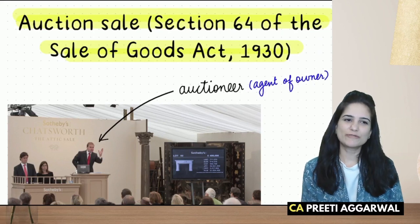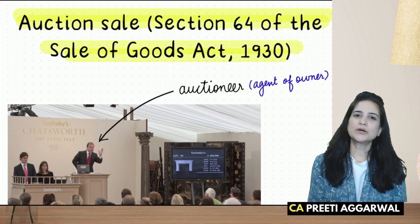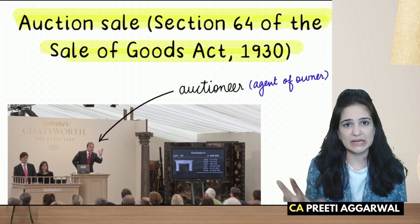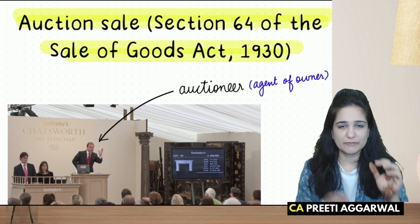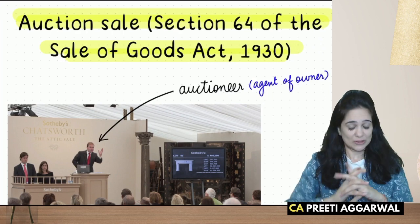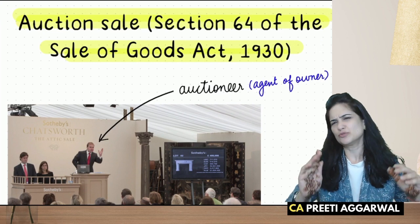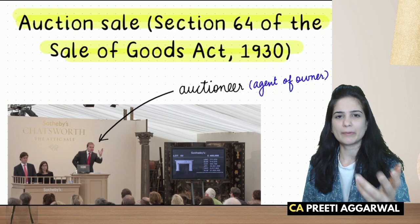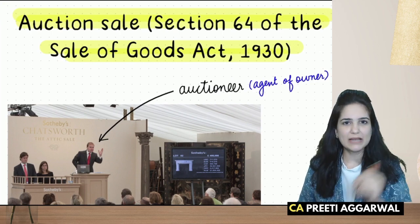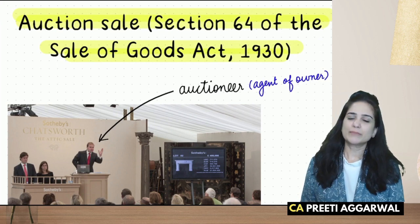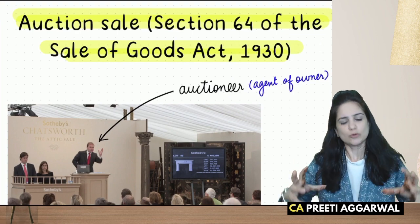Let us understand the meaning of auction sale. Let's say for example that I have a penthouse in Nariman Point, Mumbai, facing the sea. Because of sea moisture, I have to maintain it every year. Now I don't want to keep that house and want to sell it. So what is auction? If this house needs to be sold, finding a buyer one by one would take a lot of time.